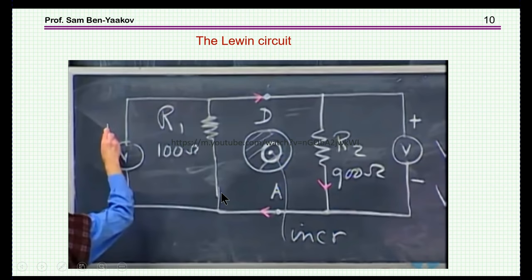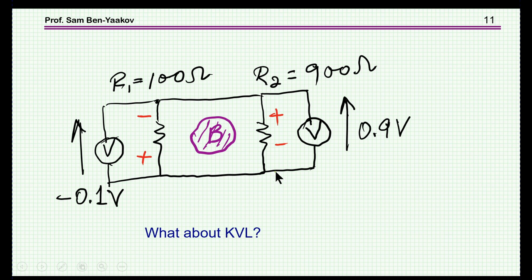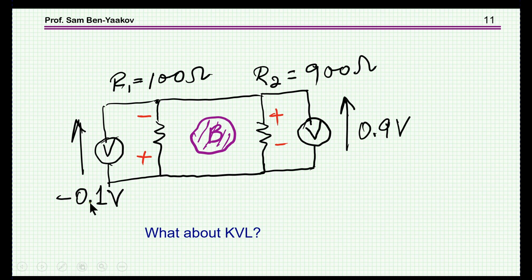Here's the circuit that Professor Lewin was discussing. We have this flux coming from this area, and there are two resistors put in a loop — you might say a single turn. When you measure the voltage on each resistor, you find 0.9 volt on one and minus 0.1 volt on the other. This looks very strange from two aspects: first, KVL doesn't hold because the sum is not zero; and also, it's disturbing that 0.9 volt appears in parallel to minus 0.1 volt.